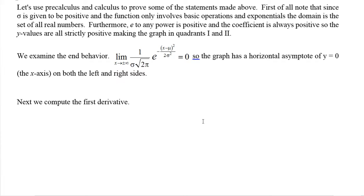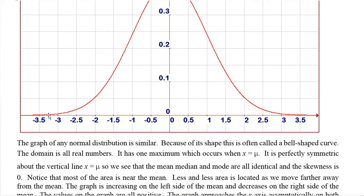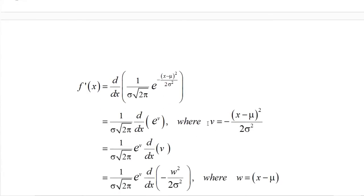We'll use precalculus and calculus to do this. First, just looking at the formula: sigma is always positive so the coefficient is positive, and e to any power is positive, so the y values are strictly positive — our graph is only in the first and second quadrant. Taking the limit as x goes to positive or negative infinity, the power goes to negative infinity, so e to that power goes to 0, giving us a horizontal asymptote of y = 0 on both sides for all normal distributions.